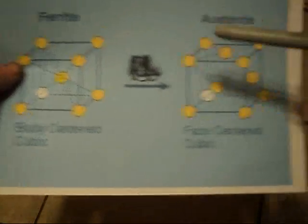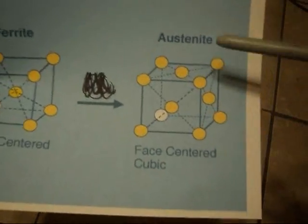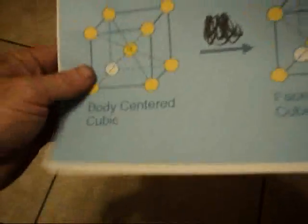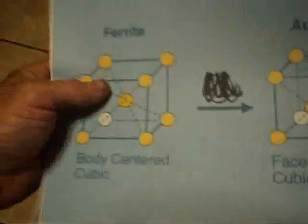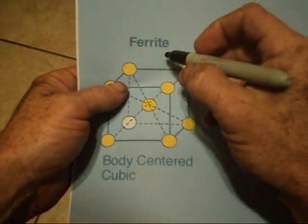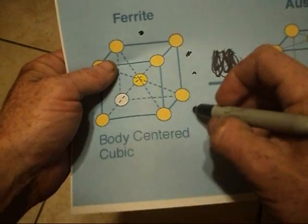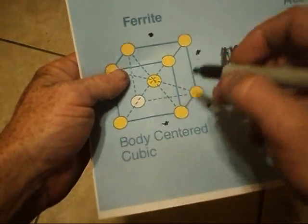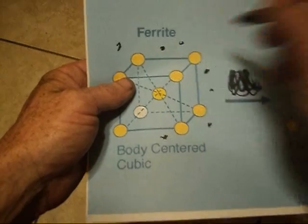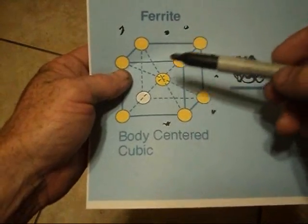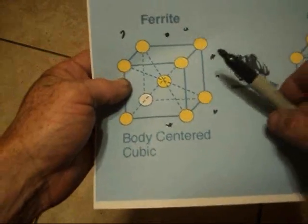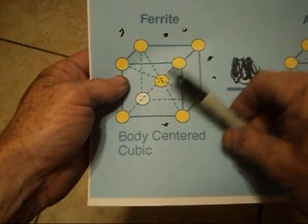When you heat it up, it changes to something called austenite. Oh, and by the way, like in this state as the ferrite, you've got little carbon atoms throughout the steel depending on the carbon content of the steel. But this being a really, really tight packed structure, the carbon really can't enter this matrix.